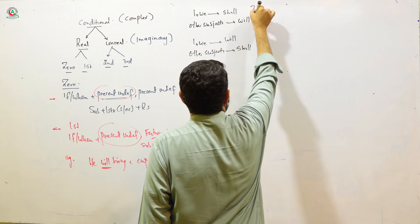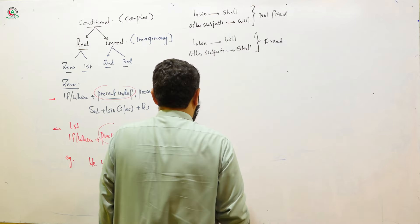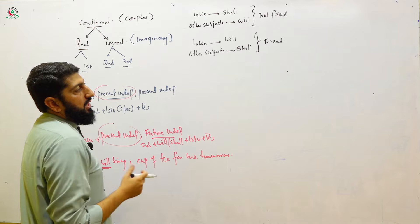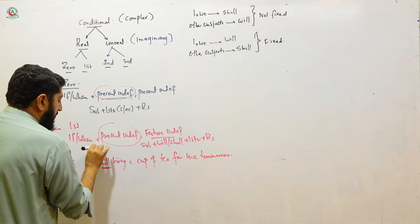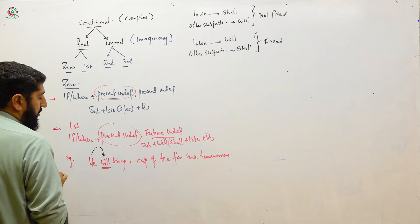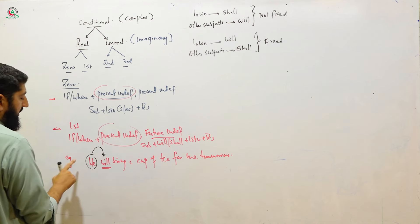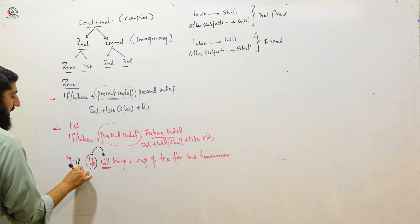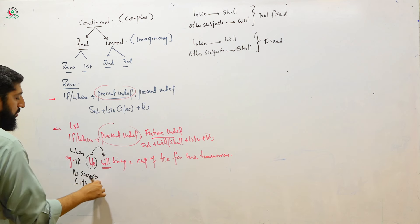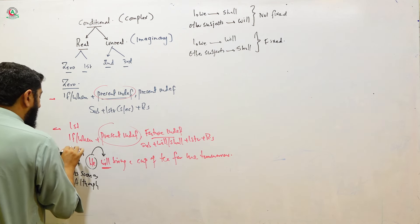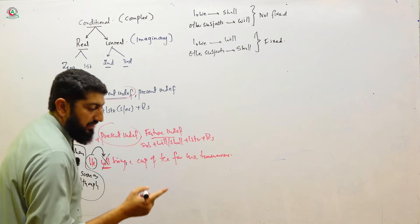When something is not fixed, we go for will; when something is fixed, we go for shall — but the topic of future tense is detailed and would take too much time. The key point: whenever we talk about the future, we use will or shall. But if you use a subordinating conjunction before — such as if, as soon as, when, although — and you are referring to the future, remember: will/shall is NOT used. You must go for present indefinite tense. That is the formula for zero and first conditional.